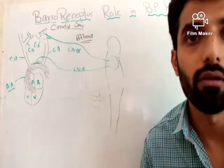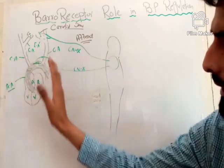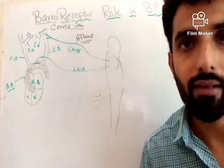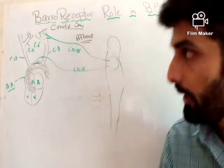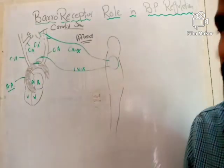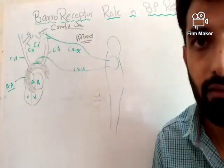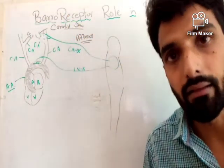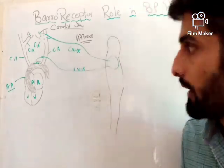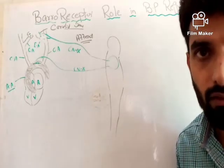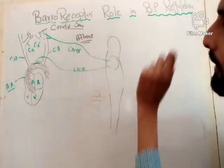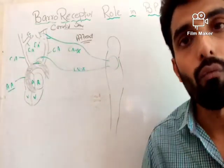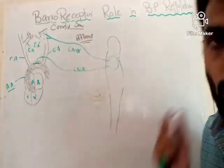For example, these nerve fibers are continuously sending impulses toward the cardiovascular region in the medulla. If blood pressure goes up, the stretch on these receptors will increase. If the pressure on these nerve endings increases, the frequency of action potentials will increase. When the frequency increases, this region will recognize that blood pressure has increased and that something must be done to regulate it.